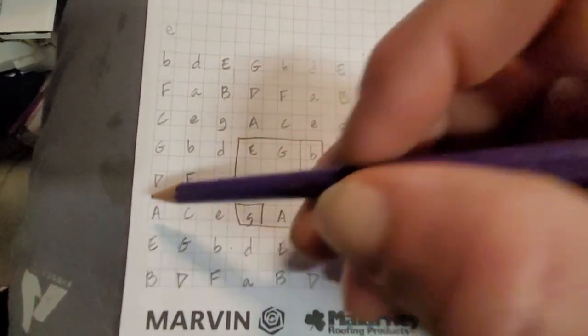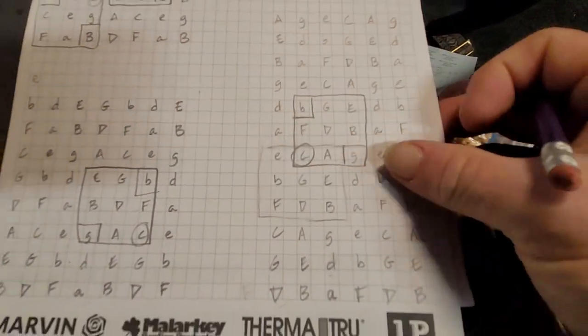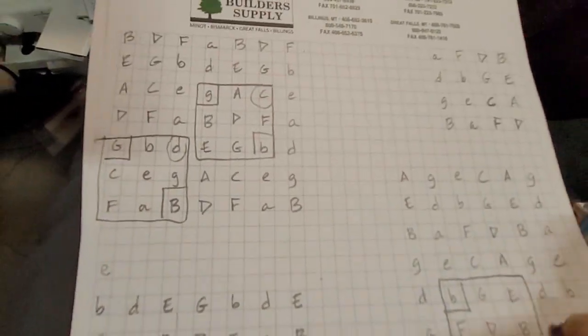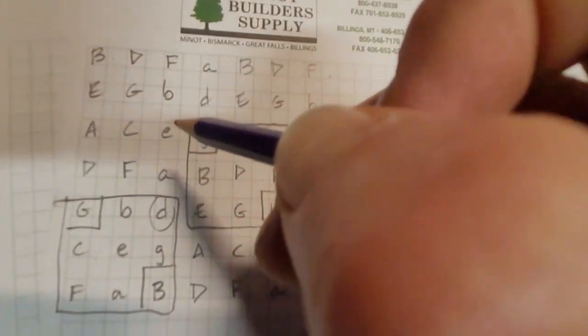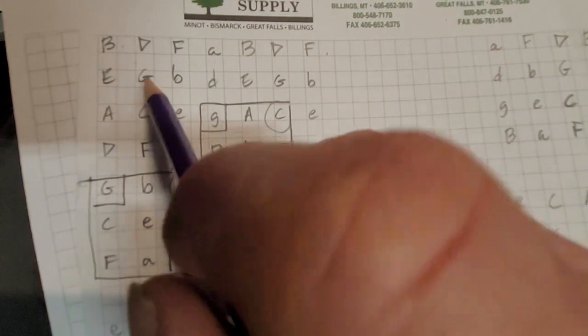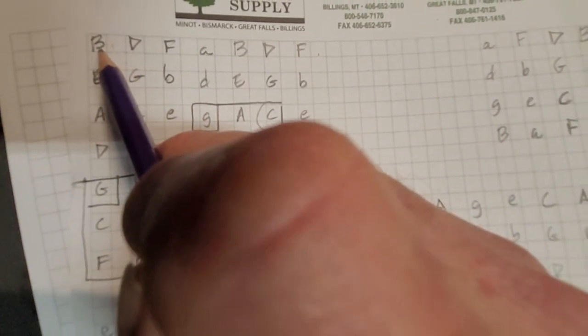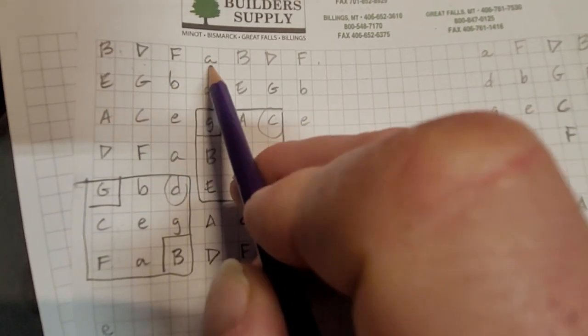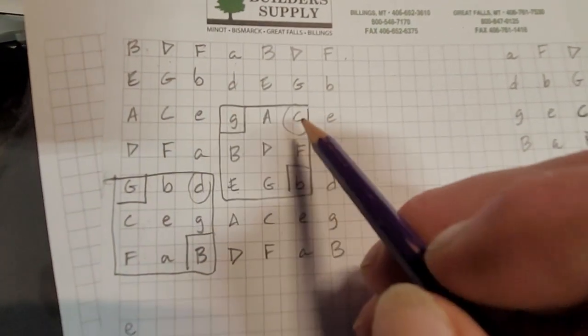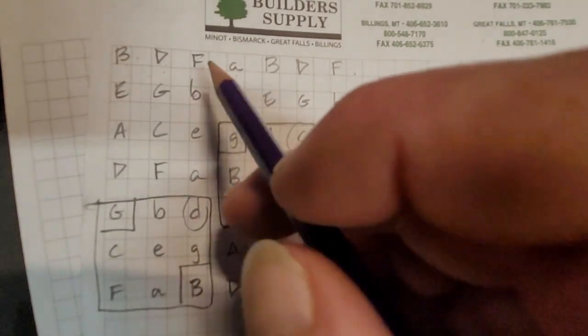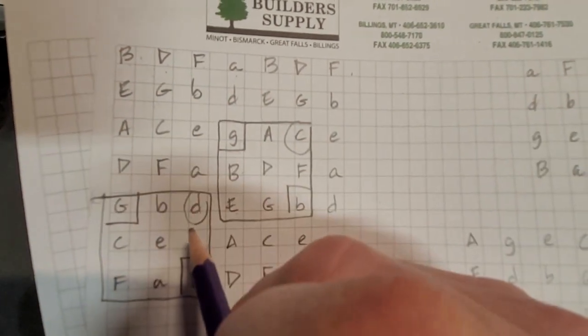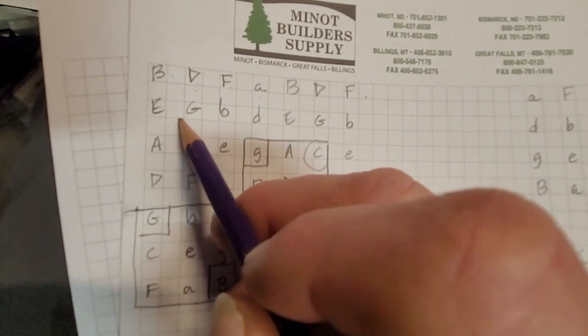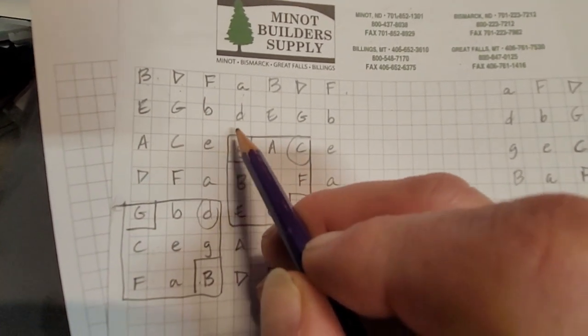Alright, now the cool thing about this is too, if we're looking at it we'll come up here and do it this way. We know that our minor leads to our major, our minor leads to our major, our minor leads to our major, and so on. That's the progression of the circle of fifths with our diminished here.